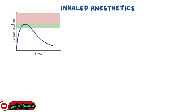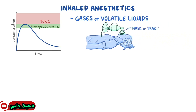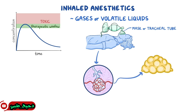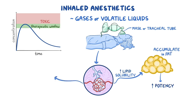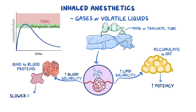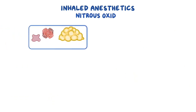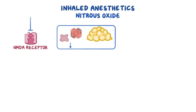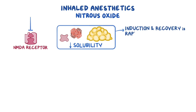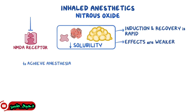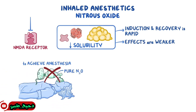Unlike parenteral agents, inhaled agents have a small therapeutic window, so the dose needed to produce the desired effect and the toxic dose are very close. Inhaled anesthetics are gases or volatile liquids given through a mask or a tracheal tube for the patient to inhale. The anesthetic then goes from the alveoli of the lungs into the blood, and finally to different parts of the body. When the anesthetic agent has high lipid solubility, it accumulates over time in body fat, increasing its potency. On the other hand, inhaled anesthetics with high blood solubility will bind to blood proteins and tend to have slower onset and recovery. Nitrous oxide acts as an NMDA receptor antagonist. It has very low solubility in blood and lipids, so induction and recovery from anesthesia is rapid, but its effects are weaker. So in order to achieve anesthesia on its own, the patient needs to inhale pure nitrous oxide, which is unsafe since it means they're not getting any oxygen.